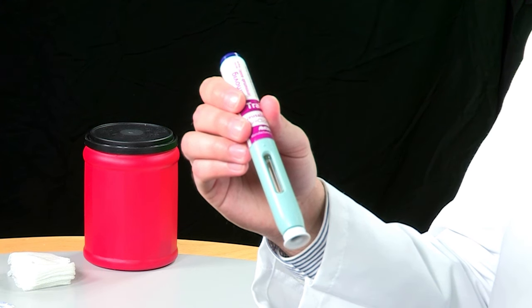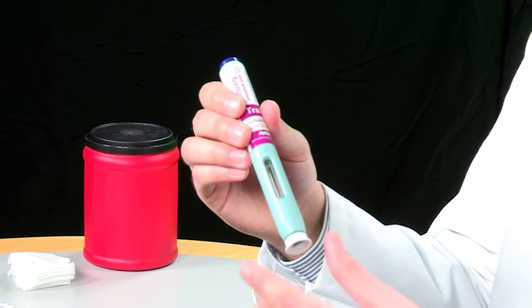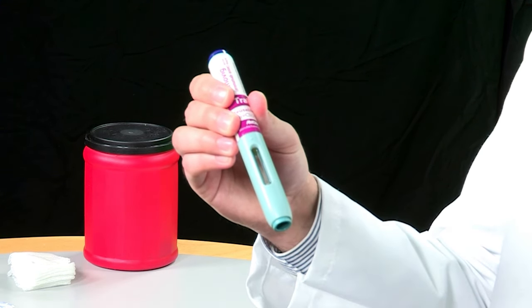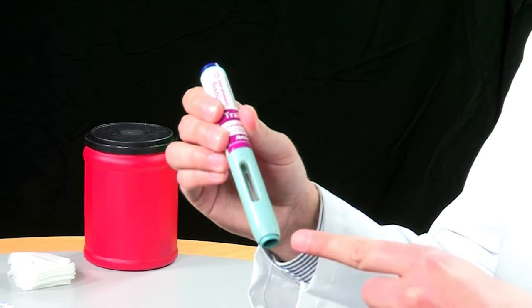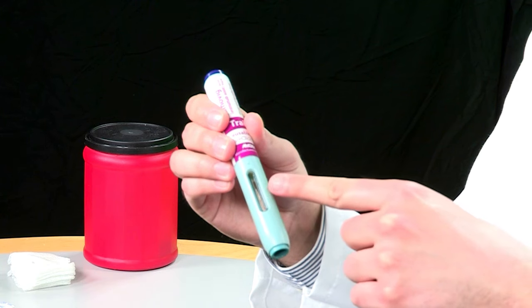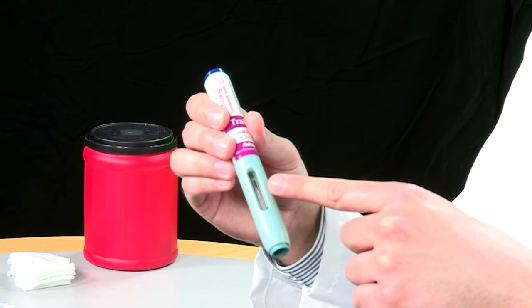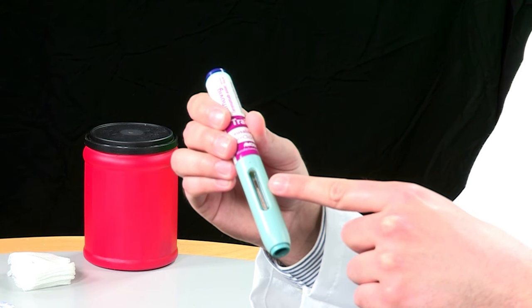The Erenumab autoinjector has several components. The white cap will need to be taken off before you start your injection. The green safety guard has the needle nested inside it. The window shows the clear liquid medication, and the window will turn from clear to yellow once you have injected all the medication.